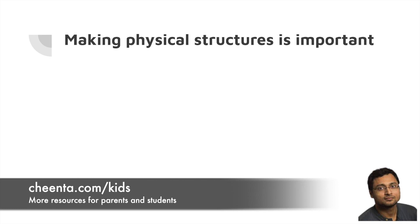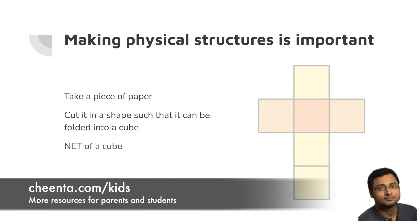So how do we do this? We take a piece of paper. We cut it into a shape such that it can be folded into a cube. This shape is known as the net of a cube. You can ask your child to cut a piece of paper in this shape of a cross, and then fold it up to make it into a cube.